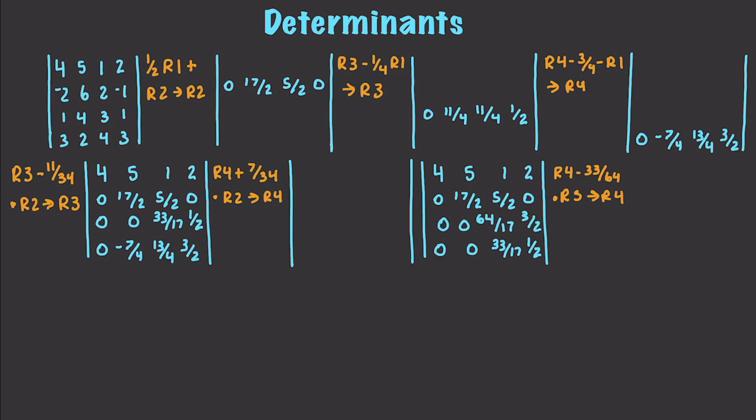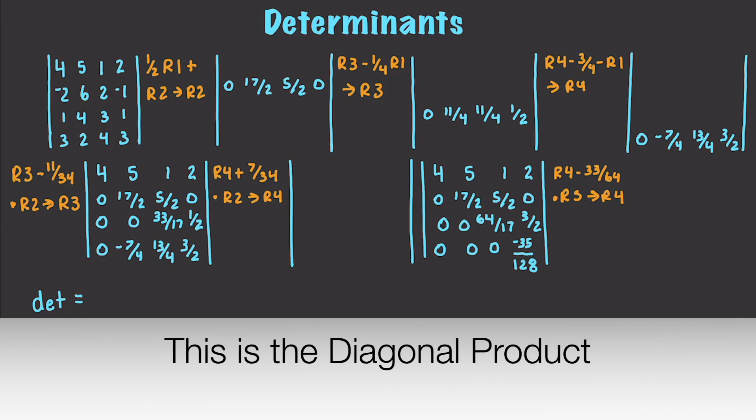Almost done. I want to swap R3 and R4. The only thing that I have to do now to finish this up and put it into row echelon form is to take R4 minus 33 over 64 times R3 and put that into R4, which is going to become 0 and then negative 35 over 128.